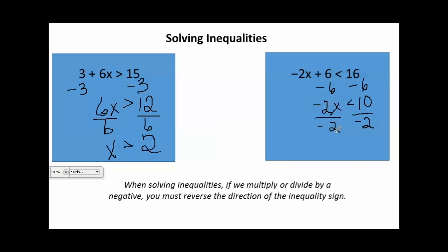Negative 2 divided by negative 2— these cancel out, leaving me with x. My less than sign is now going to become a greater than sign. Notice we flipped it. And then we have 10 divided by negative 2, which is negative 5. So here we get the final answer: x is greater than negative 5. Again, anytime you multiply or divide by a negative, we're going to reverse the direction of our inequality sign.